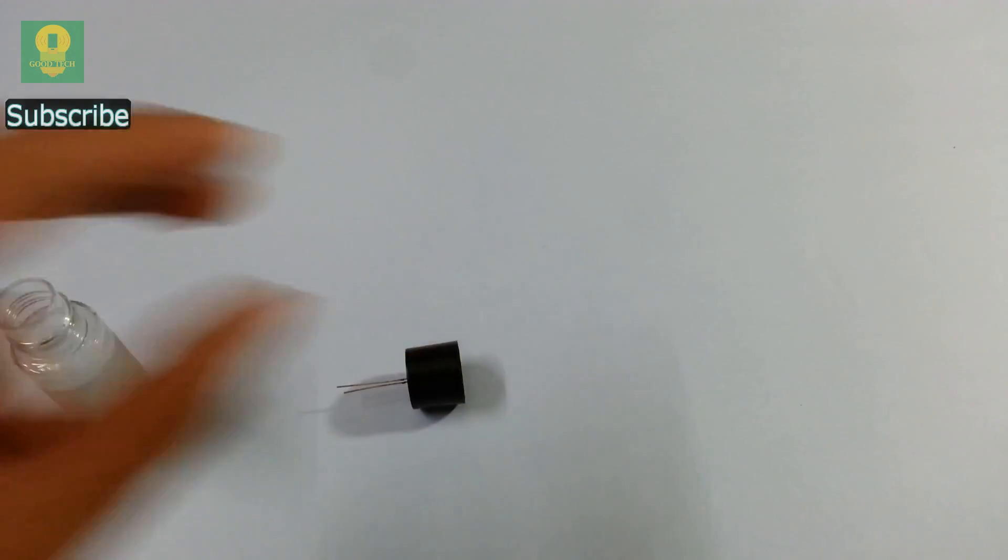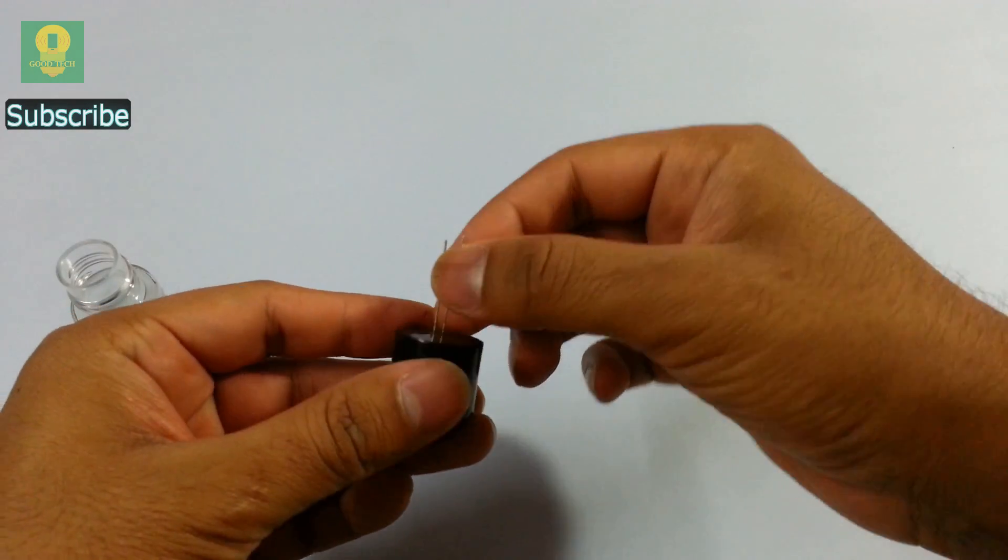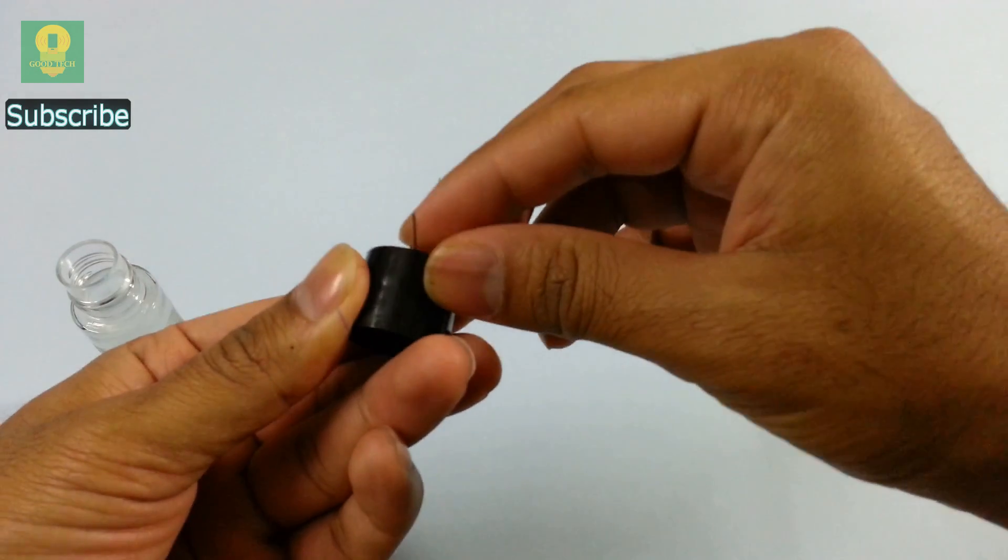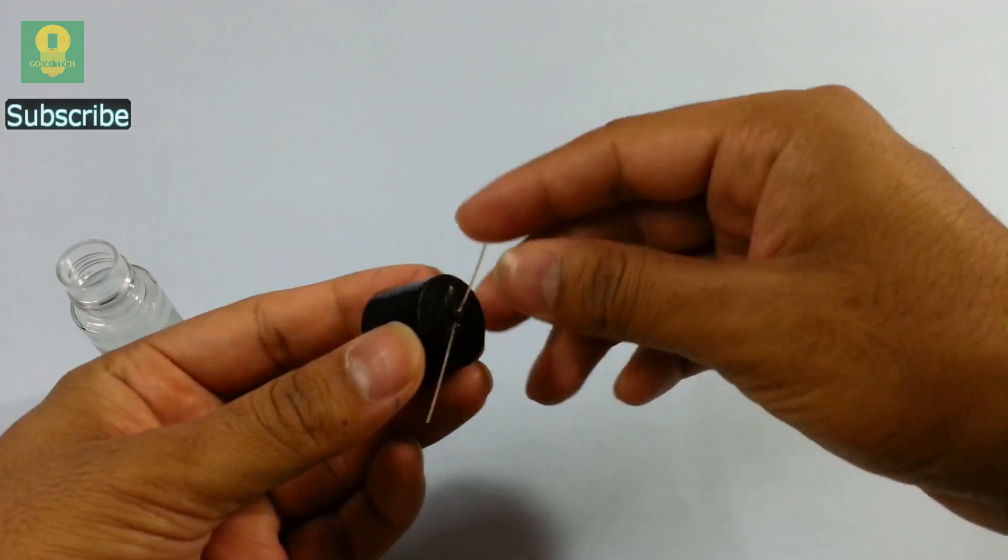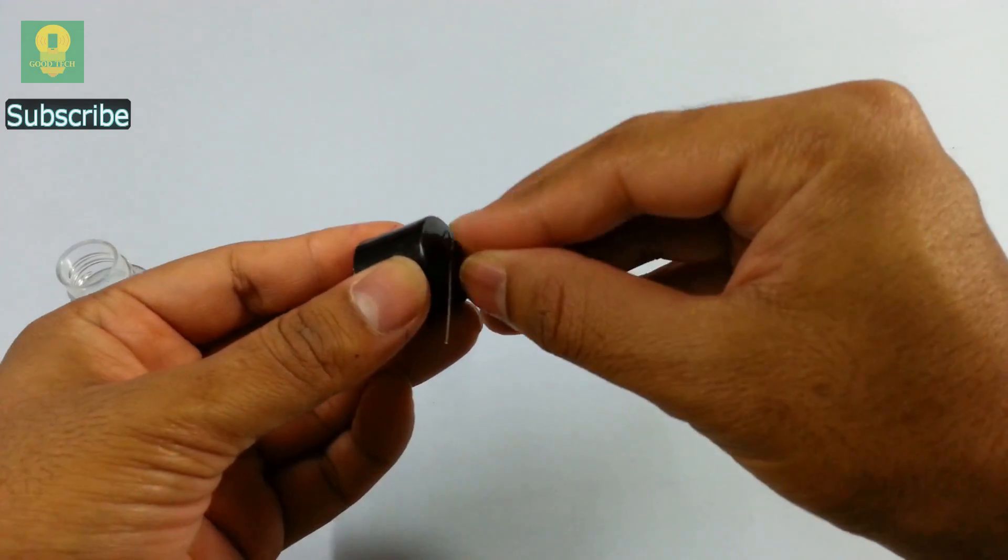Let the glue dry for some time. Now fold the positive leg of LED at an angle of 90 degrees. Also bend the negative leg in opposite direction and fold it twice or maybe thrice to make it thick.